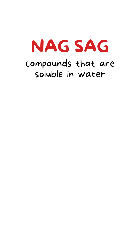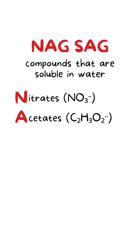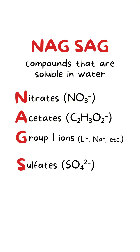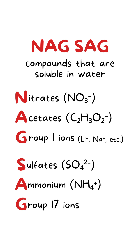NAGSAG stands for the compounds that are soluble in water: nitrates, acetates, group 1 ionic compounds like lithium ion, sodium ion, and more, sulfates, ammonium, and finally group 17 ionic compounds such as chloride ion, bromide ion, and iodide.